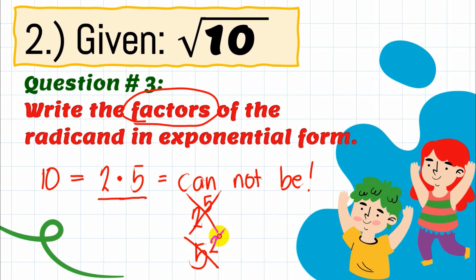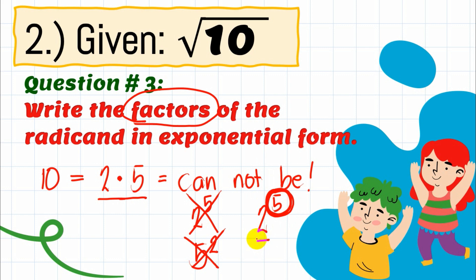Remember what I told you: the small number in an exponent tells how many times the base is multiplied by itself. With 2 times 5, these are different things — you cannot write that as an exponential form. So the answer is: cannot be, none. Always remember that.